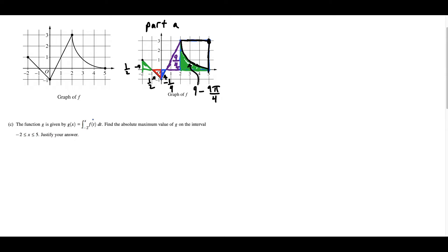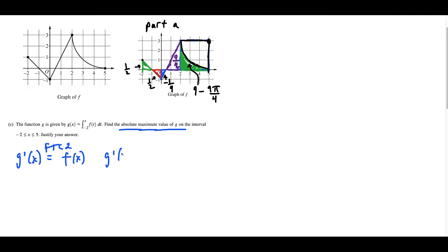For part C, we want to find the absolute maximum value of g. g of x is an area function representing the area under the graph of f. To find the absolute maximum or minimum, we first find the critical points by setting g prime of x equal to zero. Since g is an area function, we use FTC part two: the derivative of the integral from a constant to x of f of t is just f of x. So we set g prime of x, which equals f of x, equal to zero.